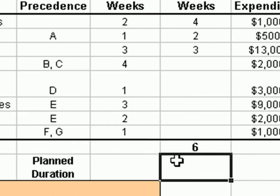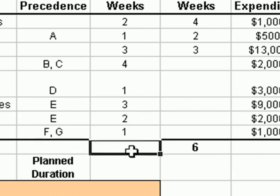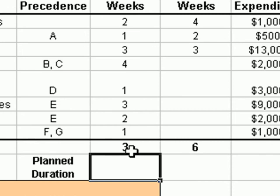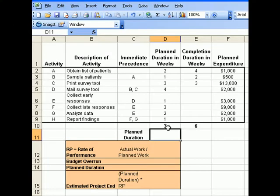Now let's go to the planned work. Again, looking at the first three activities A, B, and C — A and B fall in the critical path. Again, we add only the number of weeks for A and B, and those numbers are 2 plus 1. Remember, when calculating the rate of performance, focus only on the activities that fall in the critical path.